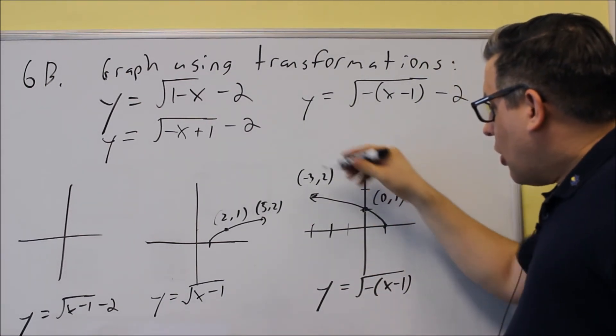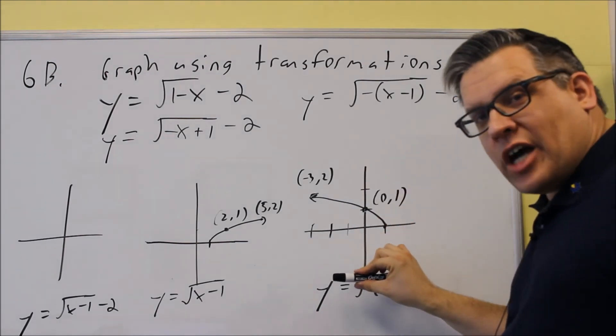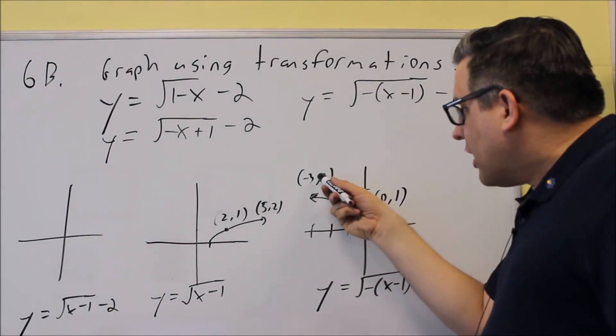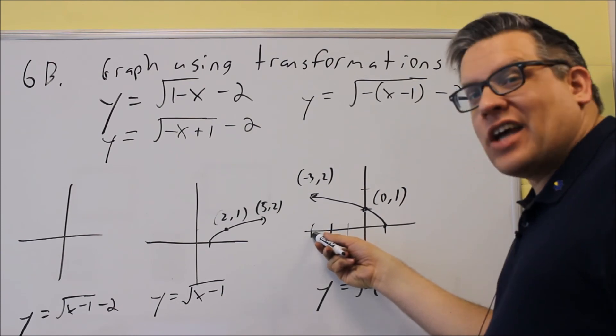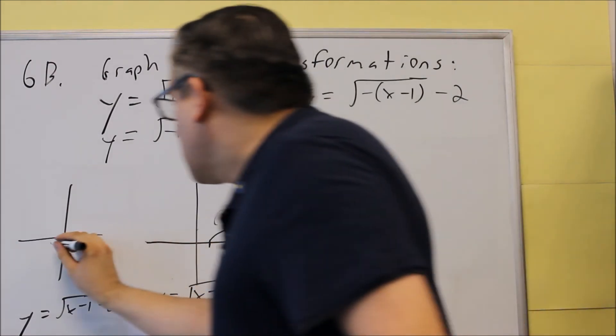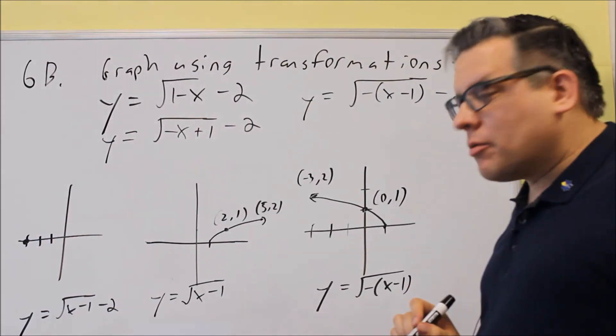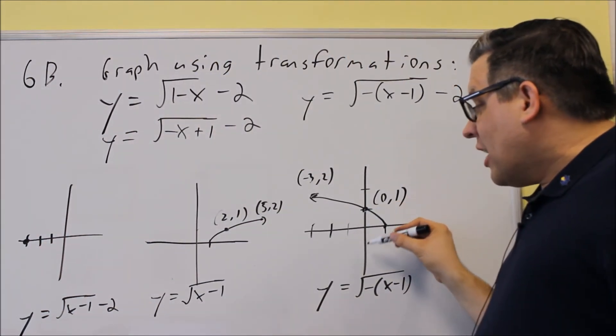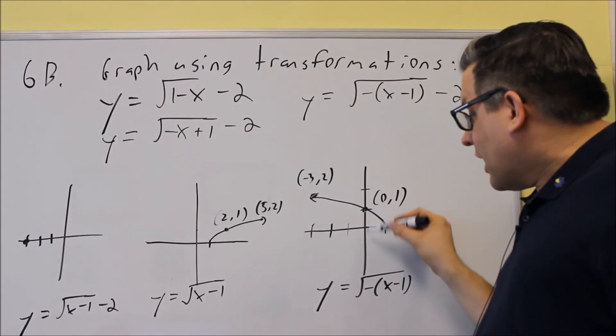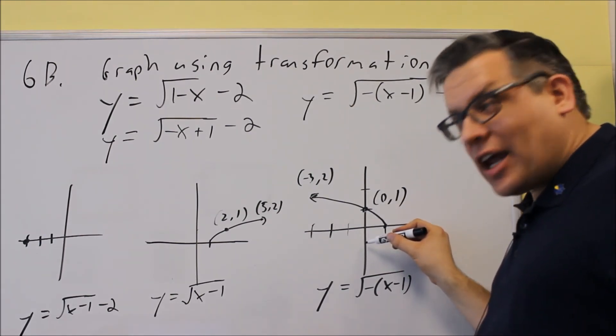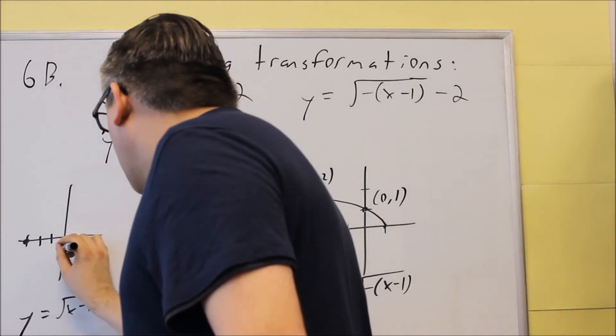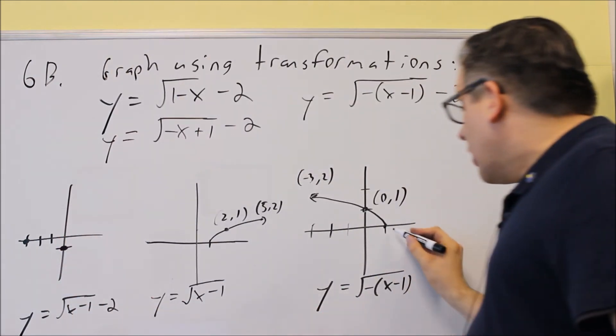So that means all these points that you see here, every one drops down by 2. So this point at (-3,2) is now going to be at (-3,0). So we'll show that one here, (-3,0), we have a point right there. At (0,1), we're going to move that down two places. So now that's going to cross at (0,-1). So (0,-1) would be here.